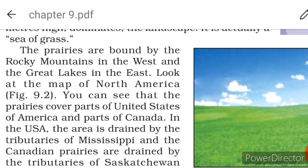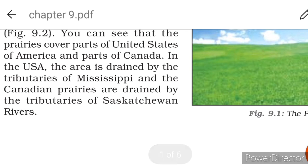The prairies are bound by the Rocky Mountains in the west and the Great Lakes in the east. Looking at the map of North America, the prairies cover parts of the USA and parts of Canada. In the USA the area is drained by the tributaries of the Mississippi, and the Canadian prairies are drained by the tributaries of the Saskatchewan rivers.